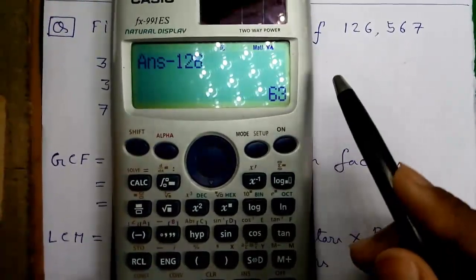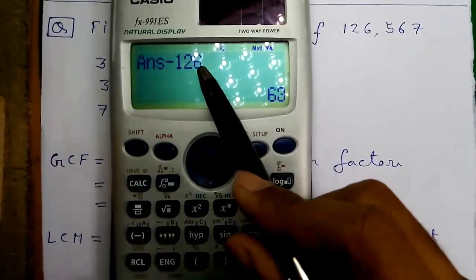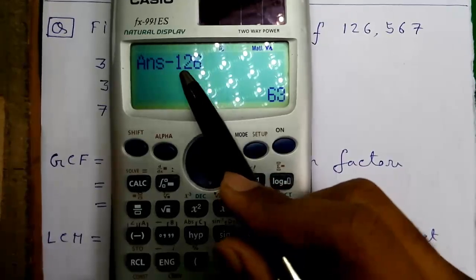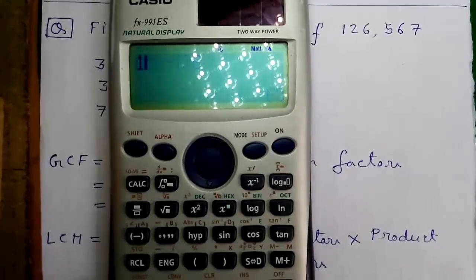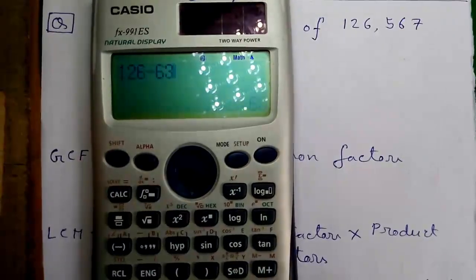The last value was 63. And now since our last value is smaller than the B value that is 126, so our 126 will become A and 63 will become B. And we will now do 126 minus 63 and press the equals button.